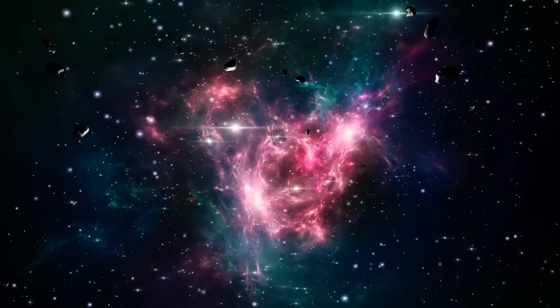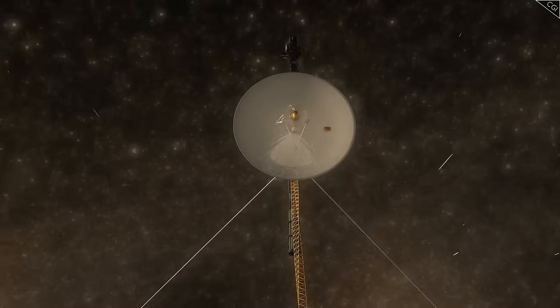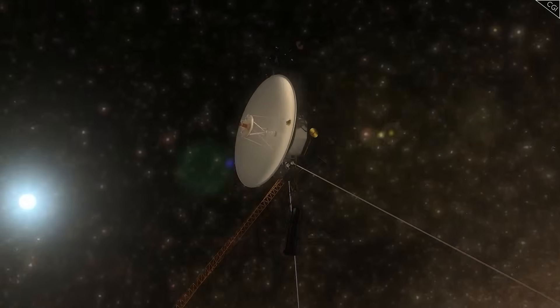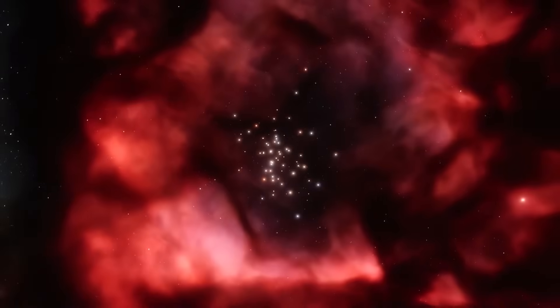Just when authorities believed they had isolated the anomaly and silenced the public leaks, Voyager 2 sent a third transmission. This time without prompting, without movement, and without corresponding solar interference. It wasn't plasma. It wasn't geometry. It wasn't even a signal in the traditional sense.